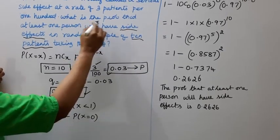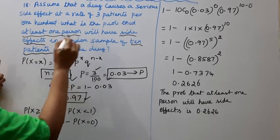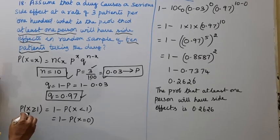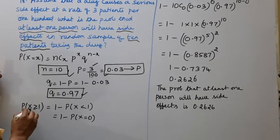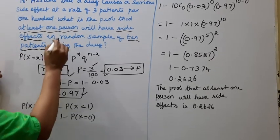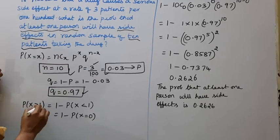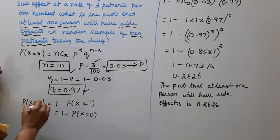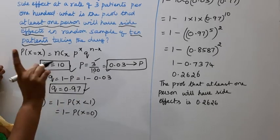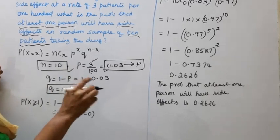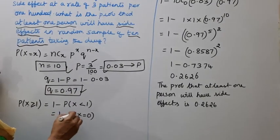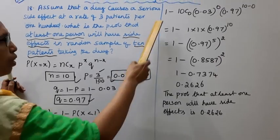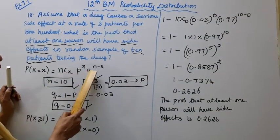This is probability that at least 1. P of x greater than or equal to 1. 1 minus p of x less than 1, less than 1 is 0.